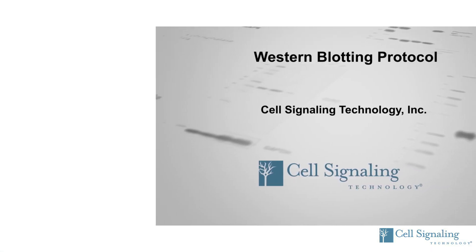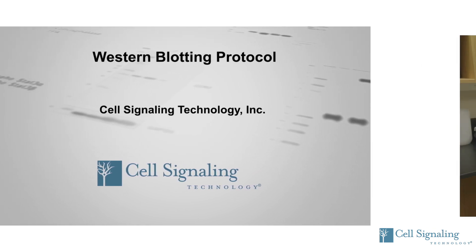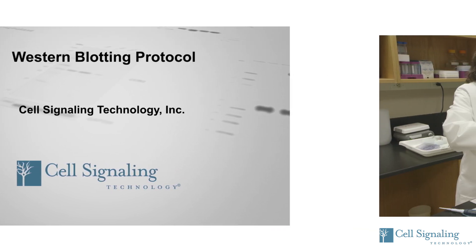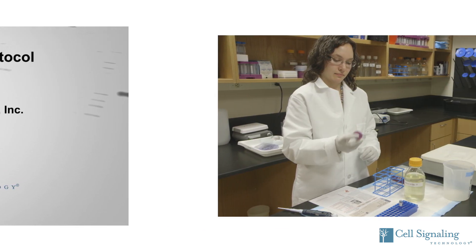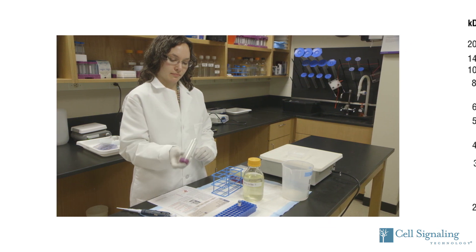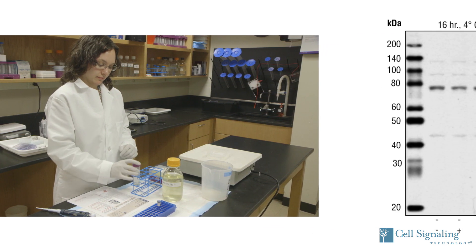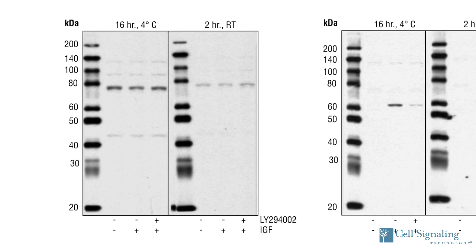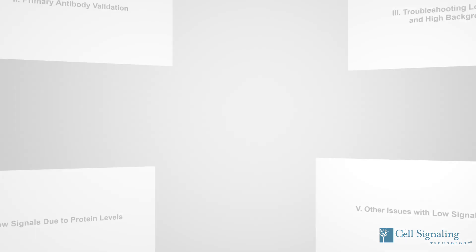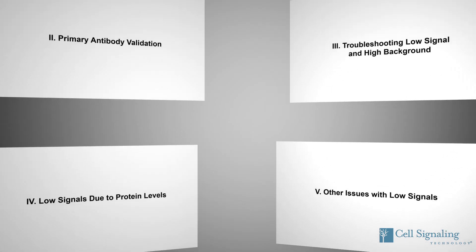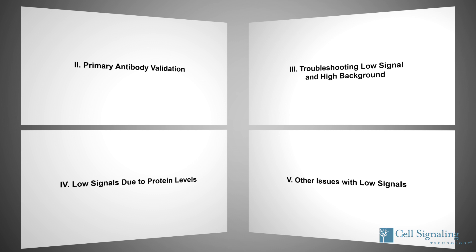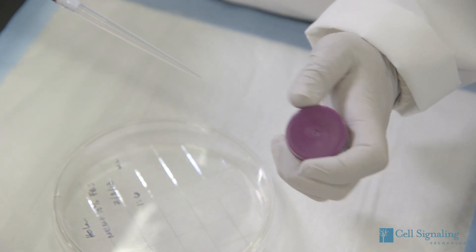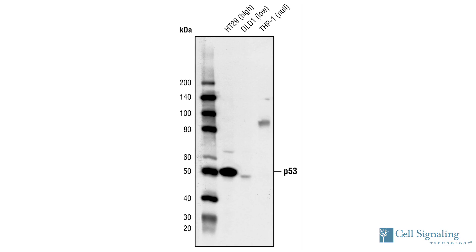This is the second video in our two-part series on Western blotting. The first video, Western Blotting Protocol, provides a comprehensive Western blot procedure used in-house by Cell Signaling Technology scientists to validate our antibodies. This second video provides a guide to help you troubleshoot, suggesting tips to help diagnose problems and providing solutions to ensure you get the expected results in the shortest amount of time.